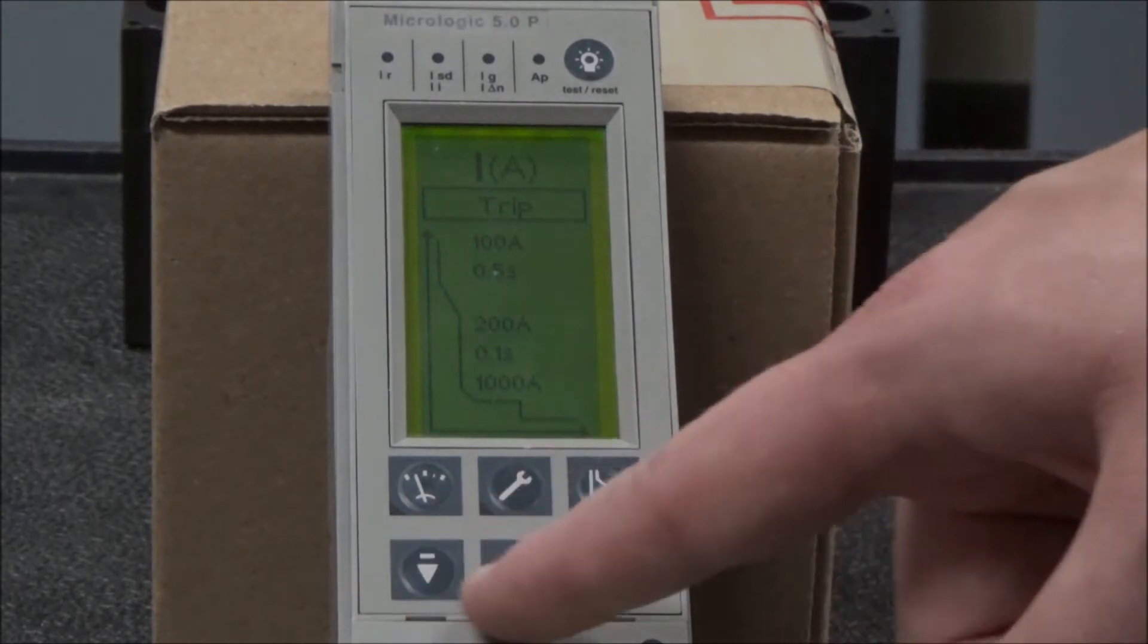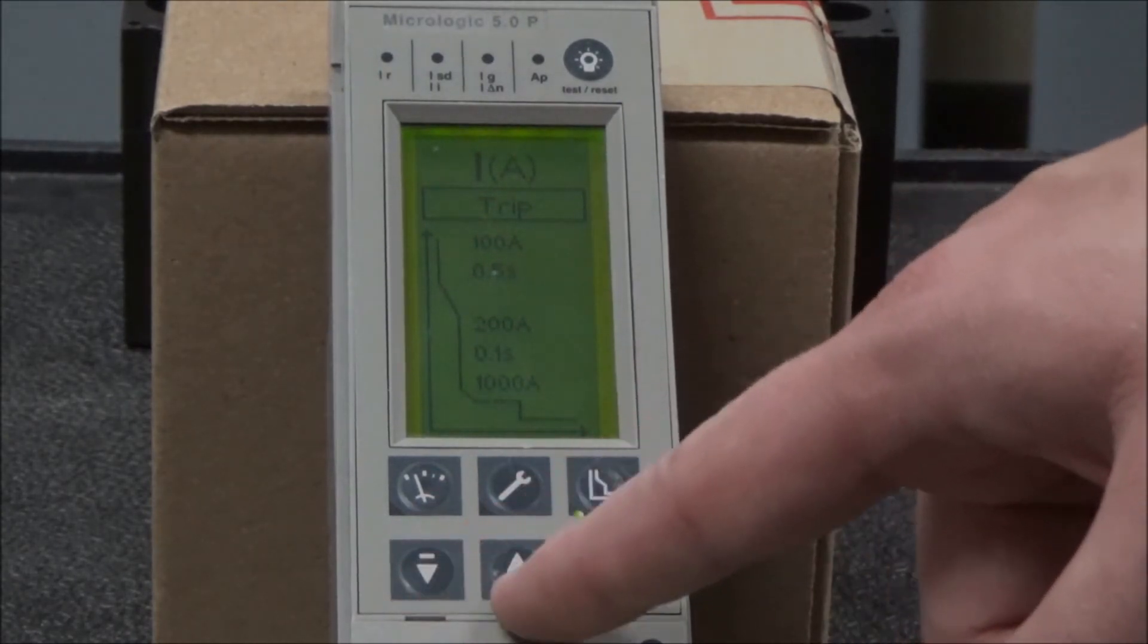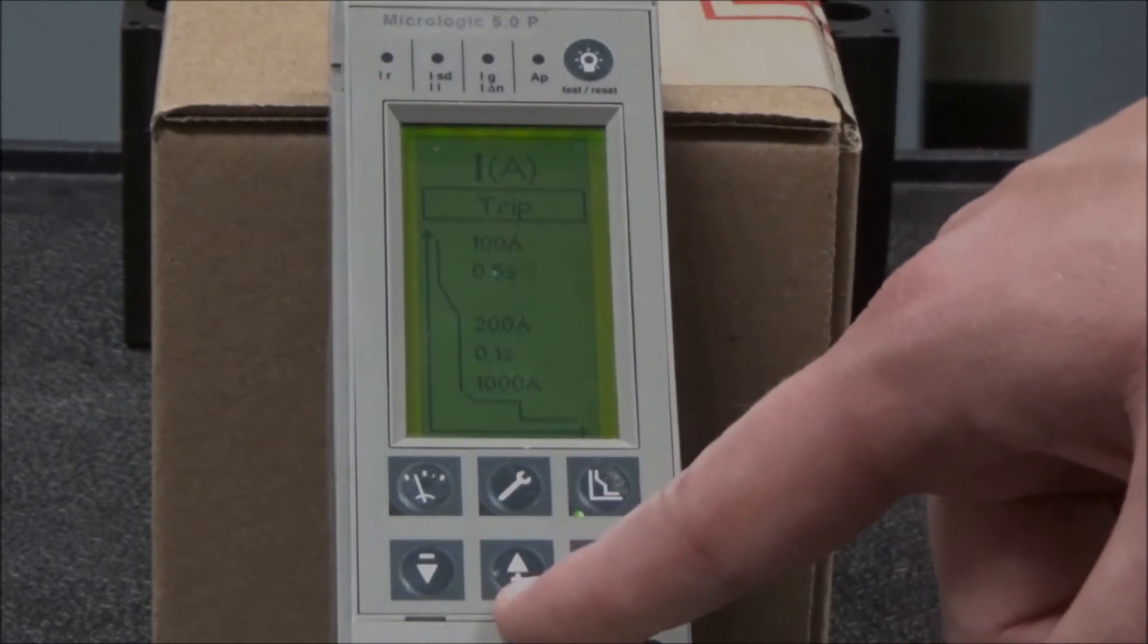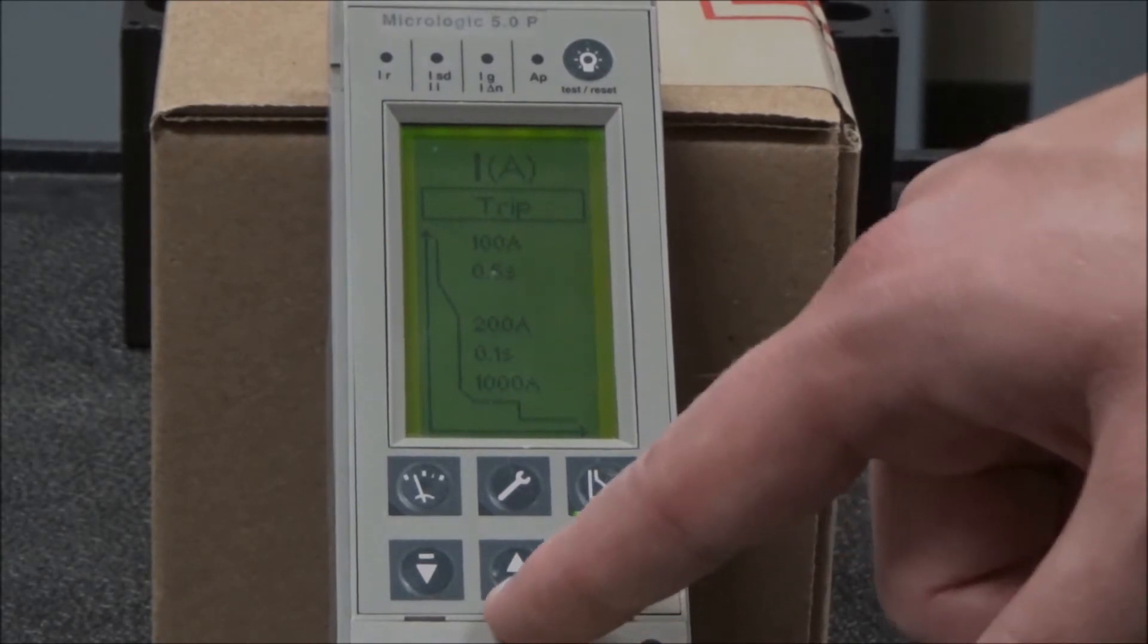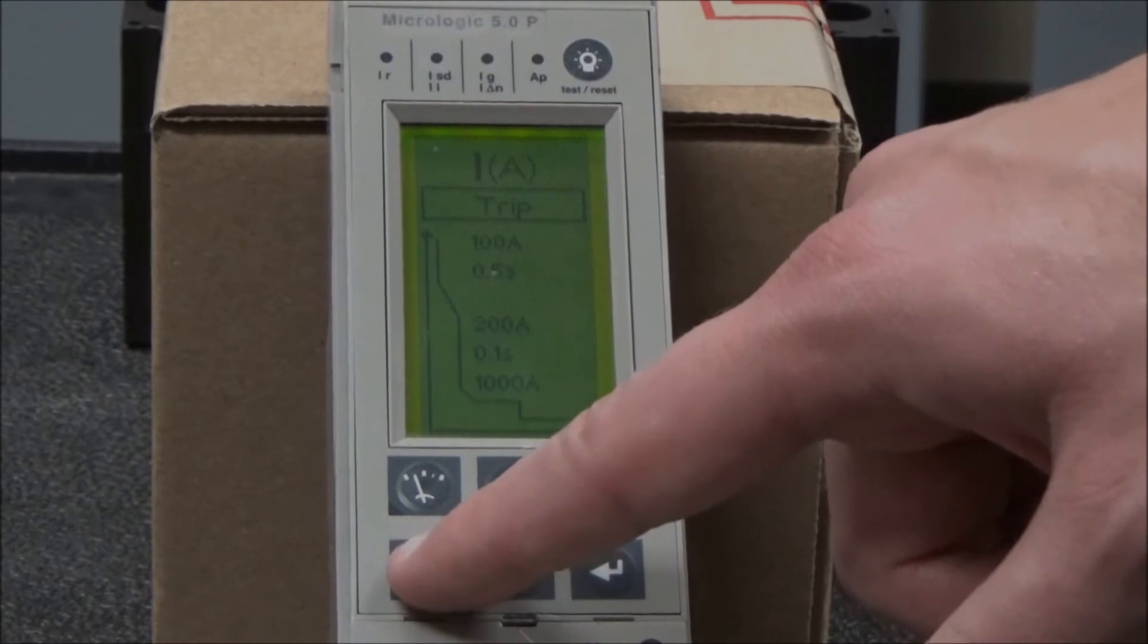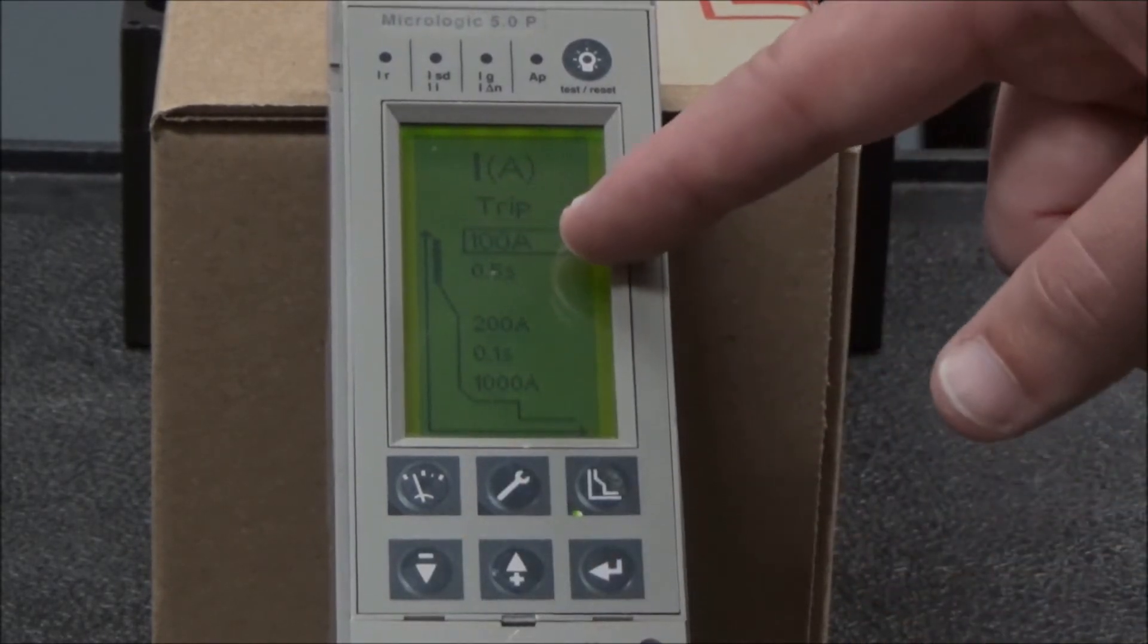You will then use the arrow buttons to arrow down or up to the specific setting that you want to change. For example, if we wanted to change the long time setting, we would go to this area.